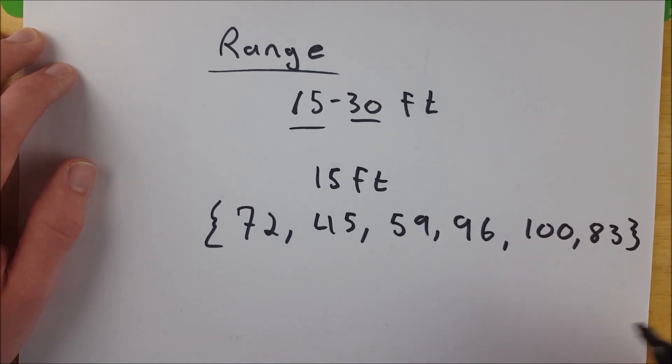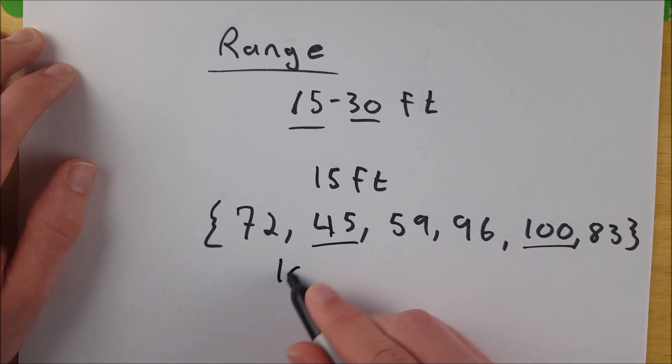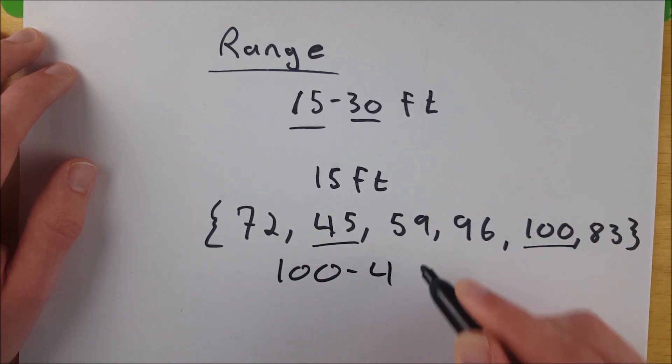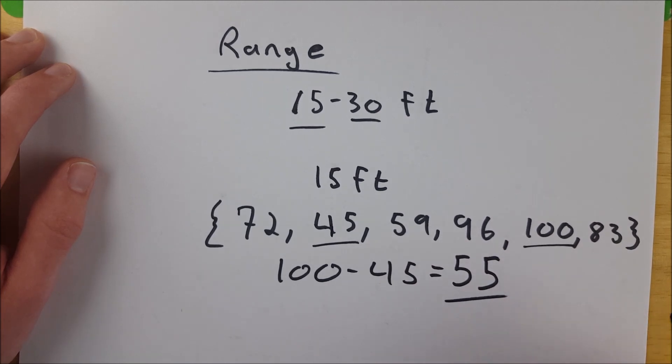So what would the range of this set of data be? Well, you just have to take the maximum, 100, and subtract from it the minimum, which in this case is 45. So 100 minus 45, and that is equal to 55. So you've got a range of 55.